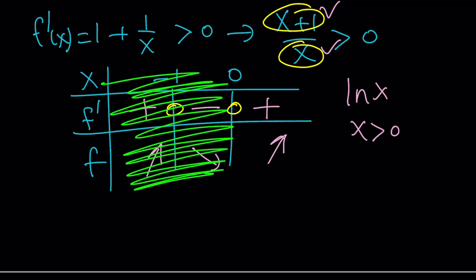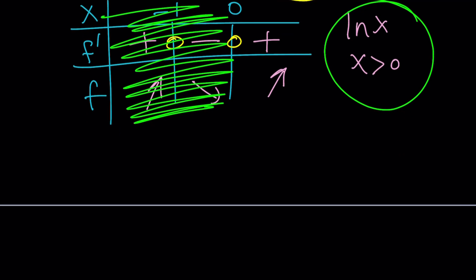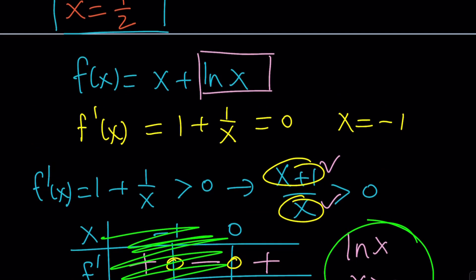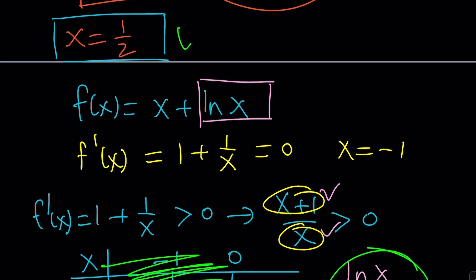If you graph this on Desmos it'll show you that it's always increasing. ln x requires x is greater than zero and f is increasing on zero to infinity and that's what matters, which means we're going to have a single solution and we already found it. We said that x equals one half works and it's good.